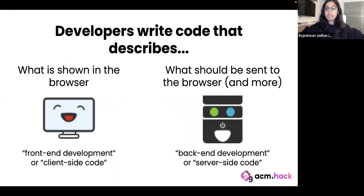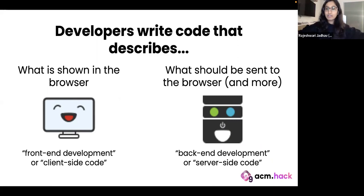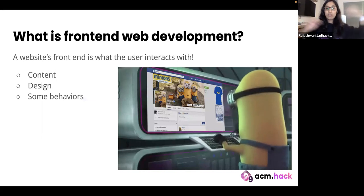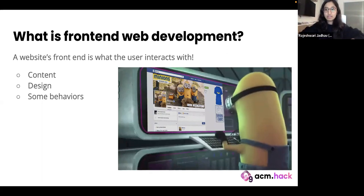As a developer, your job is to basically take care of both of these sides. The first one is coding up what is actually shown in the browser — all the elements of the Gmail web page, for example — and that's called front-end web development or client-side code. The stuff that happens with the server is called back-end web development or server-side code. To summarize: a website's front-end is basically what the user interacts with — all the content, the design, and to some extent the behavior of elements like buttons.